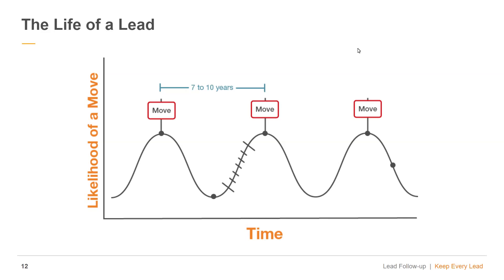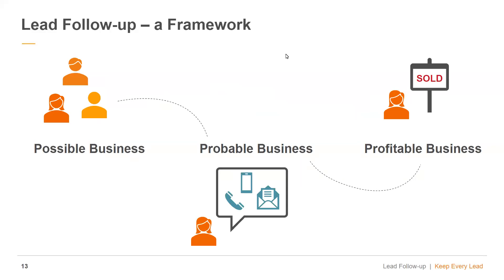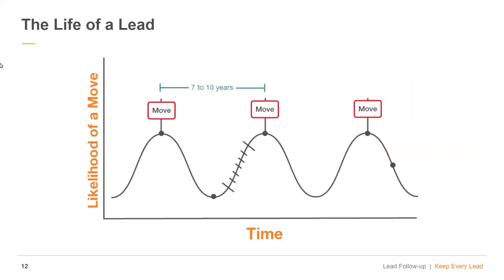What does this graph tell you? Some people move every seven to ten years. At the top of the wave, people are moving every seven to ten years. So where are they most likely to be a viable lead? At the top of the market.